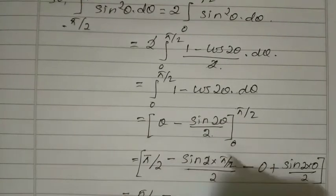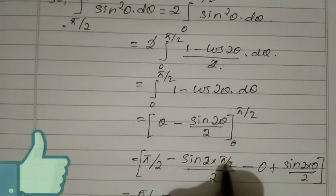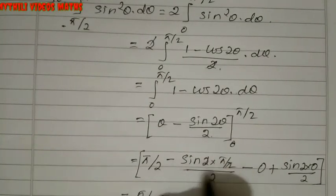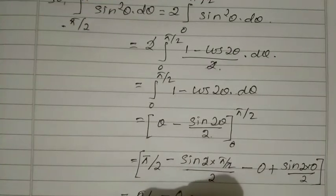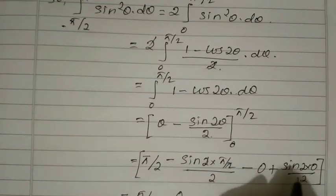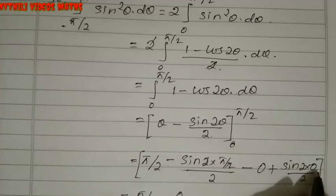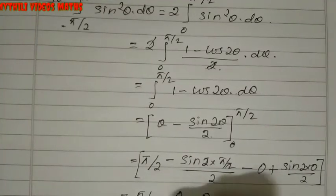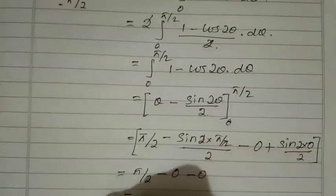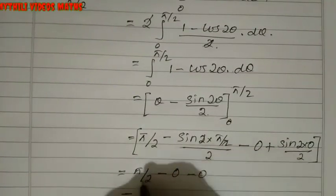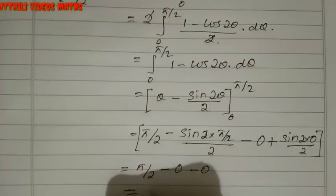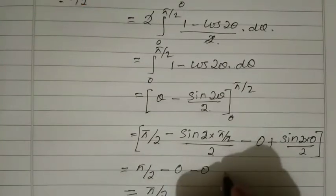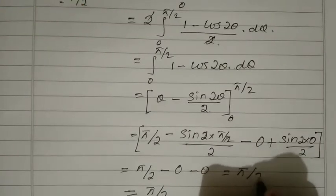sin π equals 0, so that term is 0. Substituting the lower limit 0: sin(2 × 0) divided by 2 equals sin 0 equals 0. All lower limit terms are 0. Therefore the final answer is π/2.